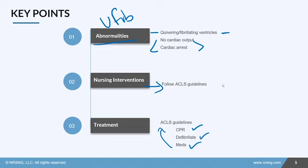Not too long ago we had a patient in the cath lab — everything was going okay and then all of a sudden he went into V-fib. Somebody started compressions and I ran to the machine and we shocked him. He came back into a sinus bradycardia for maybe 10 seconds, then went back into V-fib. We ended up shocking him about 10 different times because he had severe CAD.